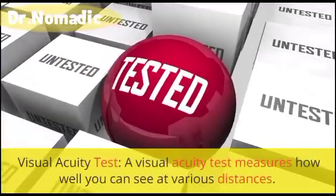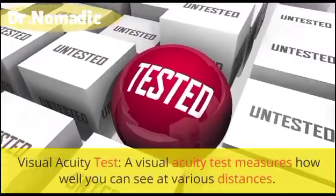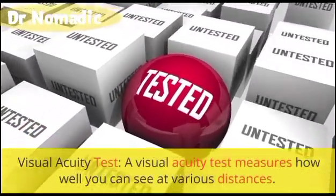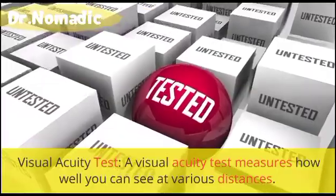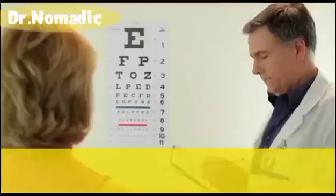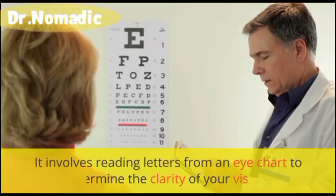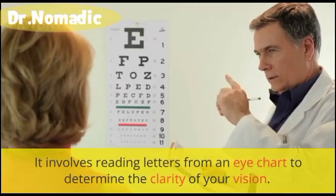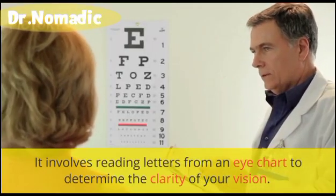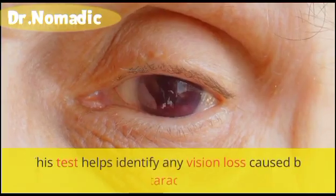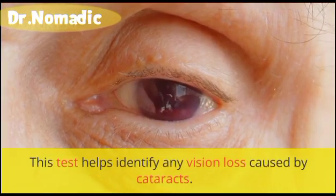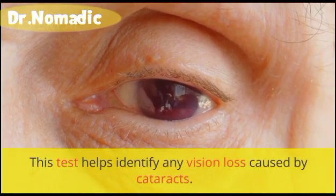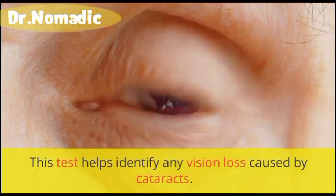Visual acuity test. A visual acuity test measures how well you can see at various distances. It involves reading letters from an eye chart to determine the clarity of your vision. This test helps identify any vision loss caused by cataracts.